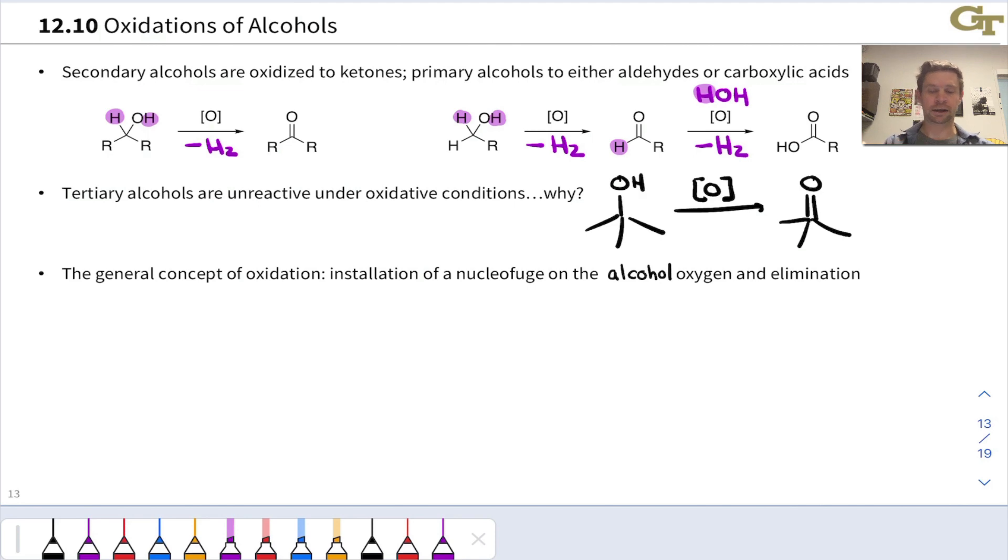A tertiary alcohol is something like tert-butanol, and treatment with an oxidizing agent would hypothetically install a CO double bond with the elimination of hydrogen. But there's a problem here. This carbon, highlighted in red, has five bonds. Never, not even once, should you draw this in your organic chemistry course.